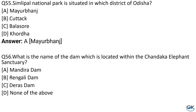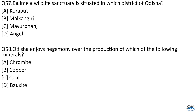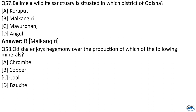Question No. 56: What is the name of the dam located within the Chandaka Elephant Sanctuary? Option A: Mandira Dam. Option B: Rengali Dam. Option C: Deras Dam. Option D: None of the above. The answer is Option C, Deras Dam. Question No. 57: Balimela Wildlife Sanctuary is situated in which district of Odisha? Option A: Koraput. Option B: Malkangiri. Option C: Mayurbhanj. Option D: Angul. The answer is Option B, Malkangiri.